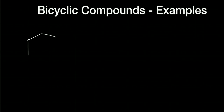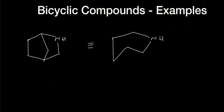Let us say we have a structure like this. Can you find out the IUPAC name for this? Please feel free to pause the video. This is equivalent to writing like this, and we have a nitrogen here. So whenever nitrogen comes, we have to use the word 'aza'.